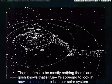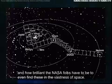There seems to be mostly nothing there, and gosh knows that's true. It's sobering to look at how little mass there is in our solar system and how brilliant the NASA folks have to be to even find these specks of planets in the vastness of space.